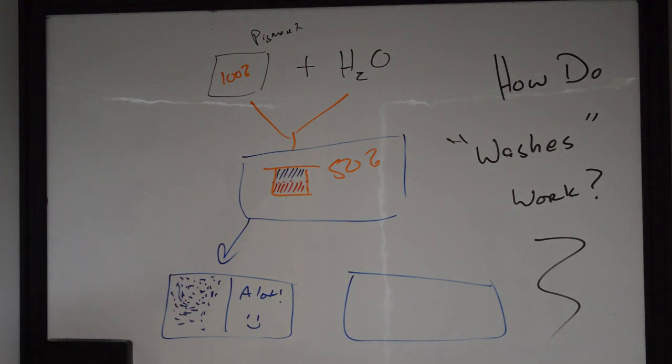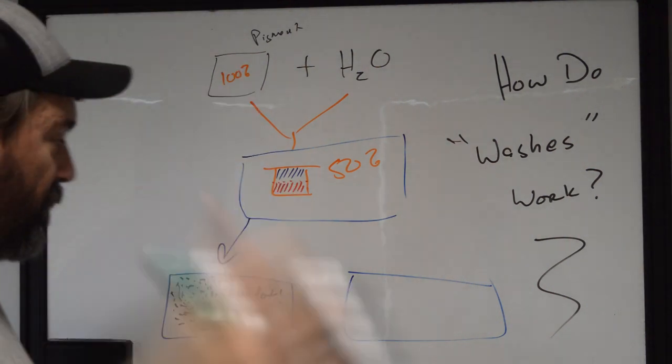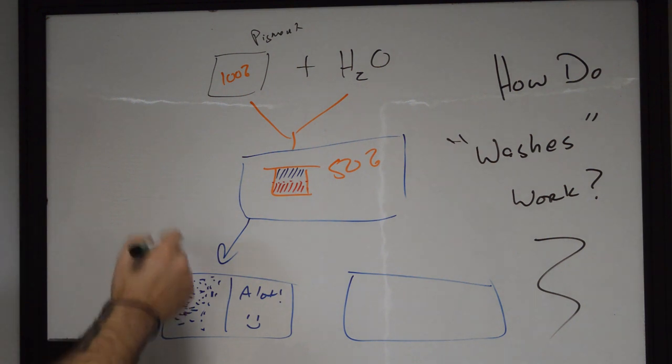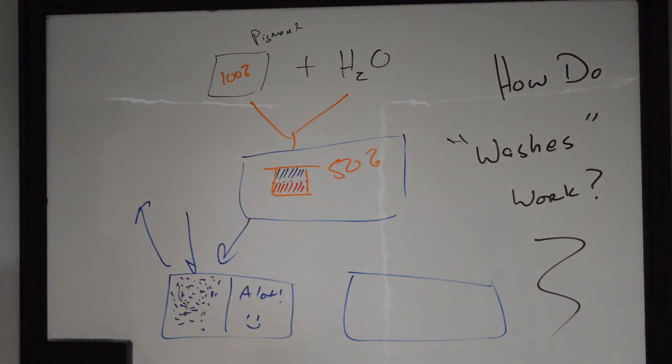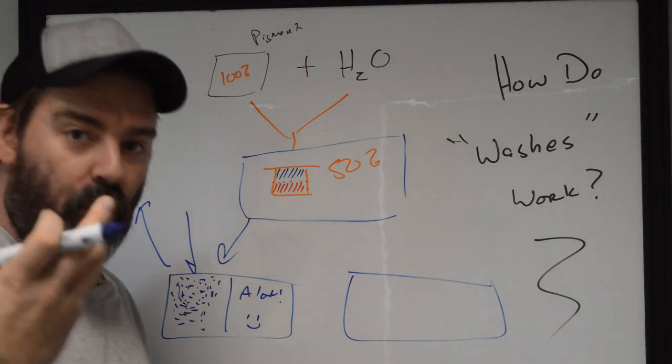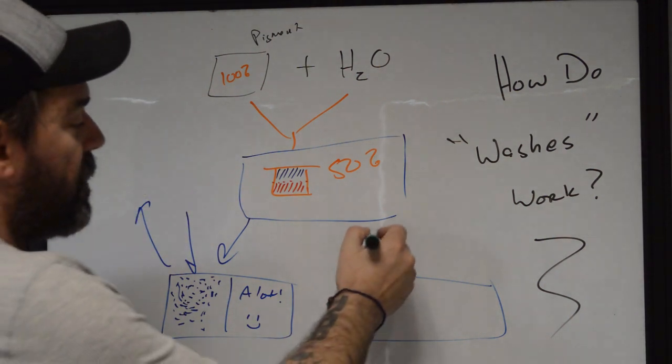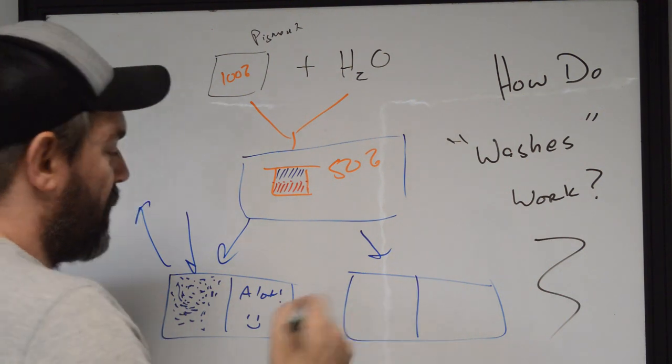So that when energy, like light energy, is coming from whatever source and it goes to interact with this, there's going to be more of those actual particles of pigment for light to interact with. And when it comes back out, it's going to make that color appear stronger and more vibrant than it is.